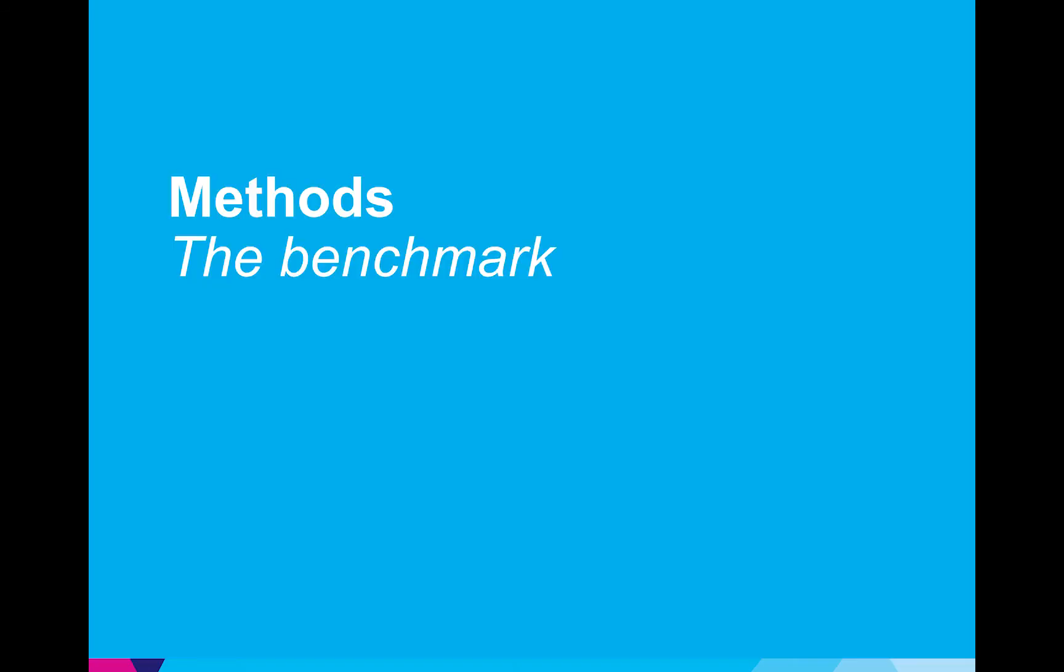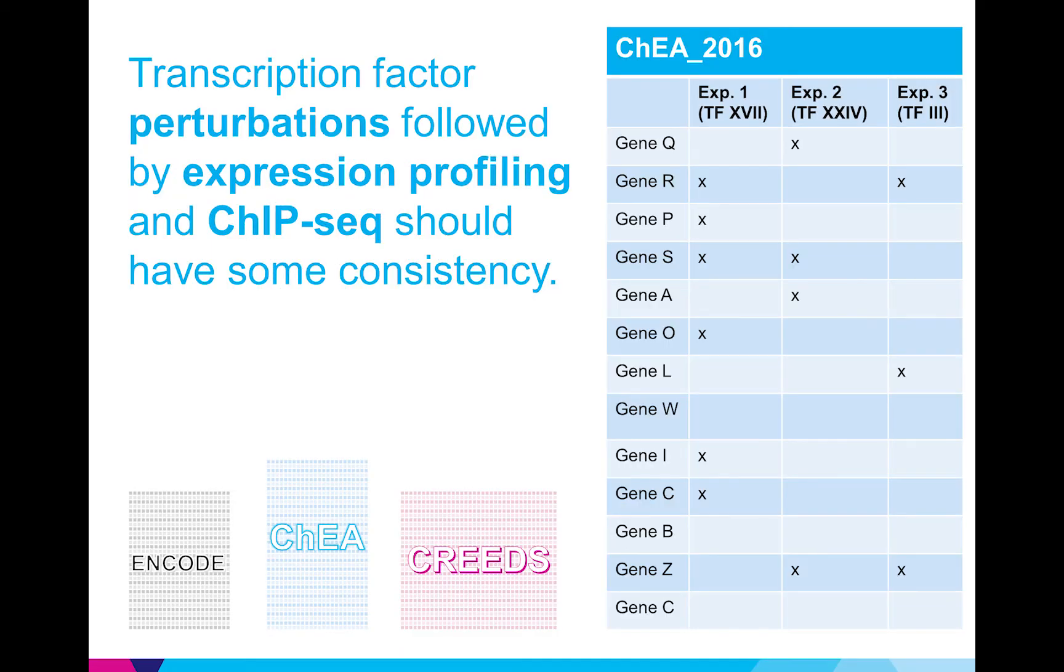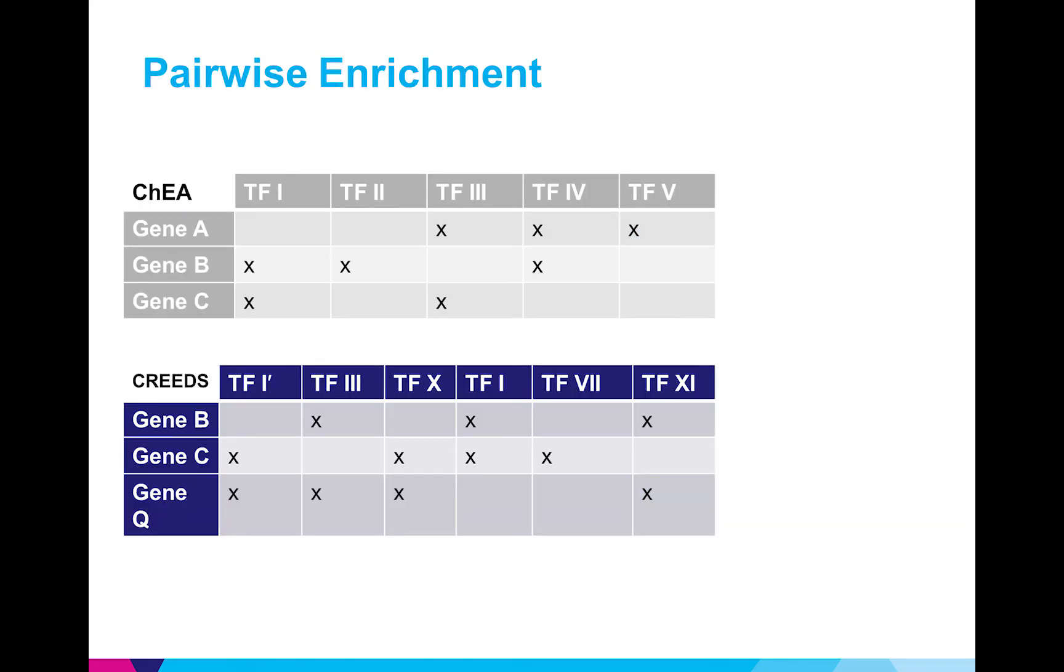Alright so I have all these different algorithms and the way to benchmark them is by using these three libraries. So each library records transcription factor perturbations followed by an expression profiling either with chip-seq or microarrays and what I hypothesize is that different experiments in different libraries that corresponded to the same transcription factor should have some agreement with one another. So what I would do is I would take a pair of libraries at a time and then I would use the gene sets in one library to perform enrichment into the other library. So in this example I have transcription factor one I get its gene set and then I perform enrichment into CREEDS and what I get is a ranking of the terms in CREEDS, the transcription factors, and what I get here is a good result because the transcription factor one terms in CREEDS were highly ranked and this is the same as the input term I used.